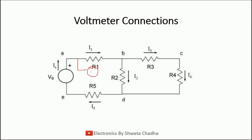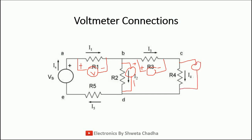If I connect the voltmeter in parallel with R1, the positive terminal here and negative terminal here, this gives us voltage V1. Similarly, a voltmeter connected in parallel with R2 gives V2, in parallel with R3 gives V3, in parallel with R4 gives V4, and in parallel with R5 gives V5. You need to connect the voltmeter one by one with all five resistances.